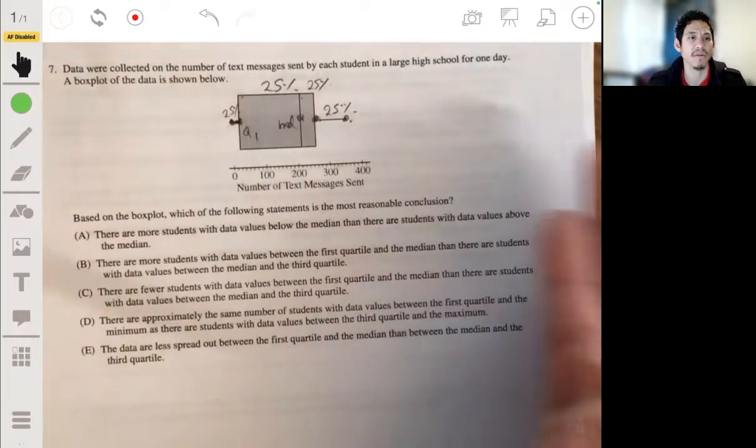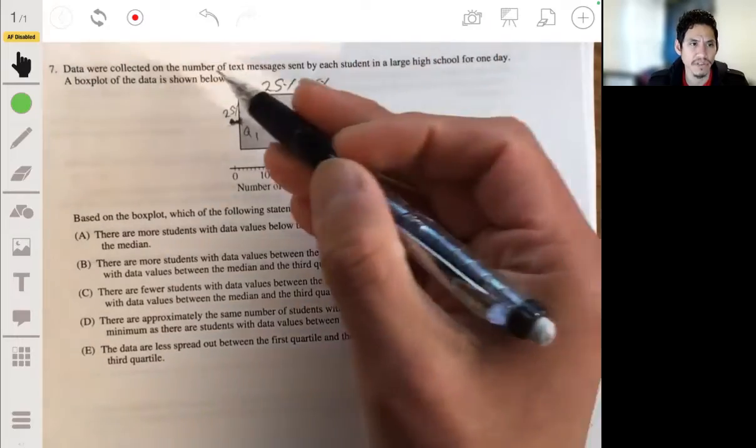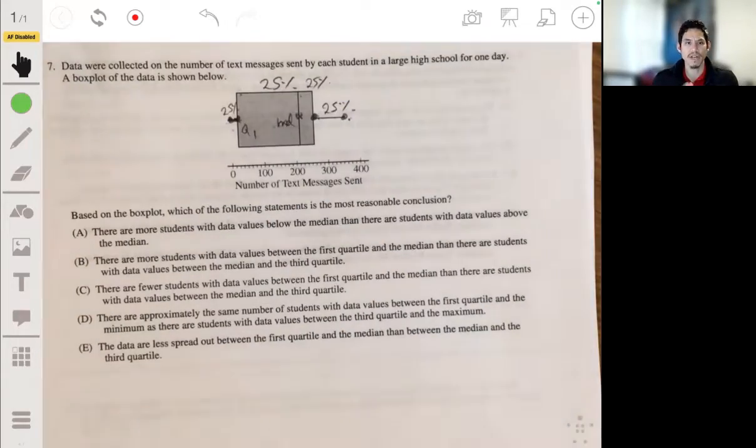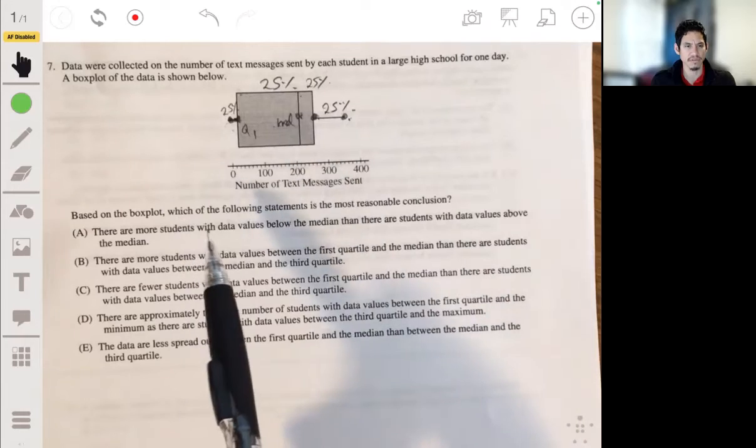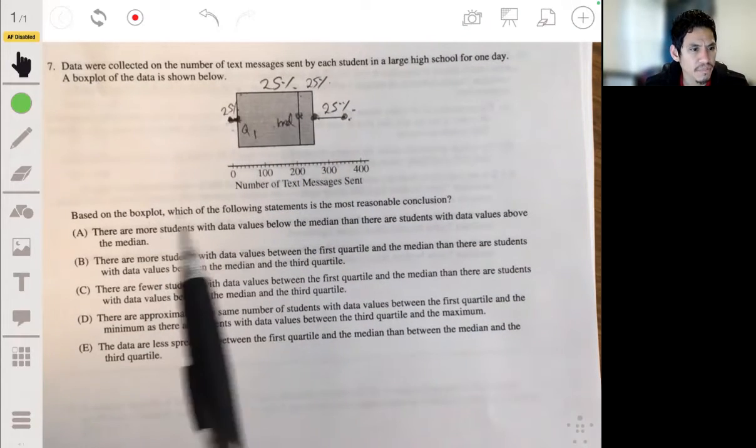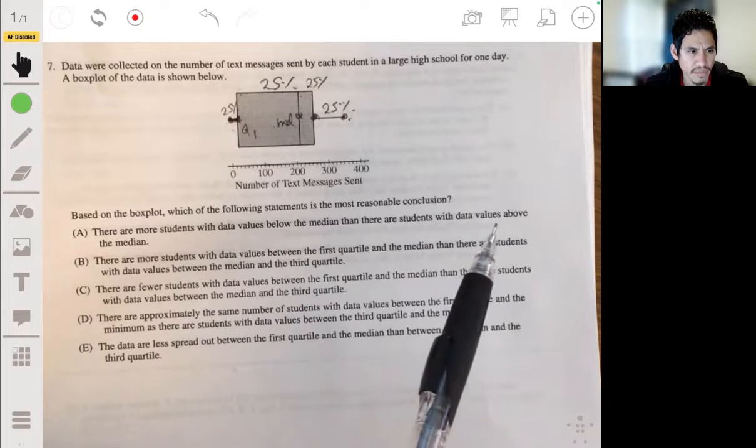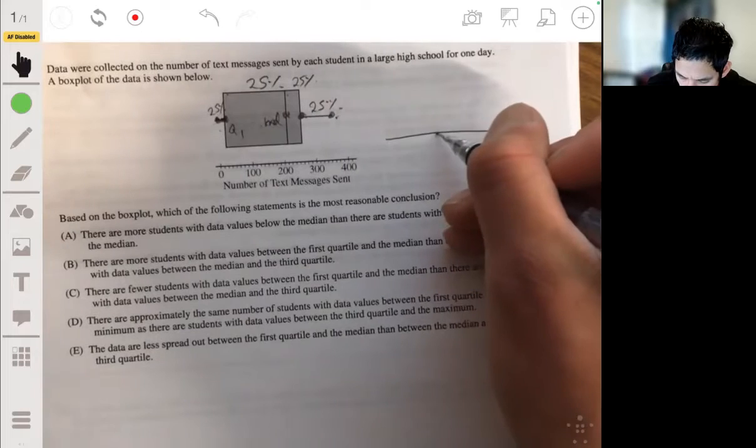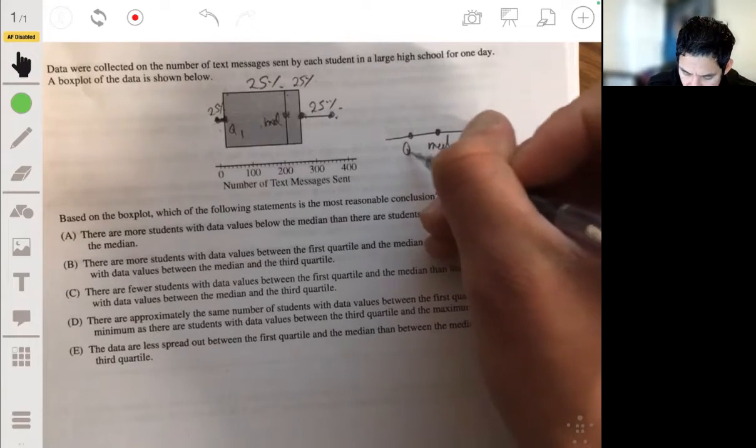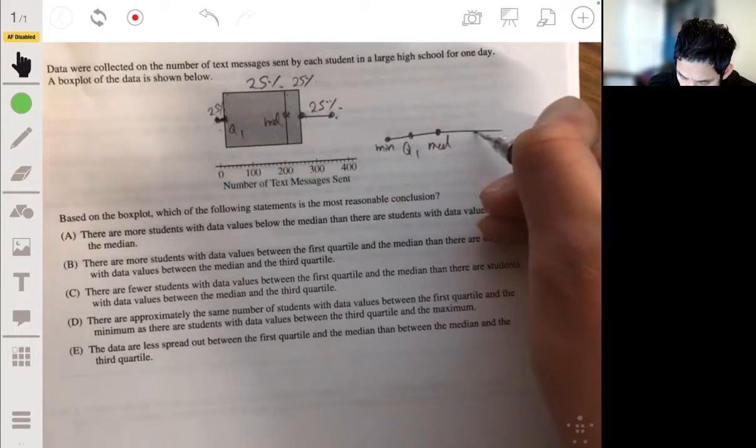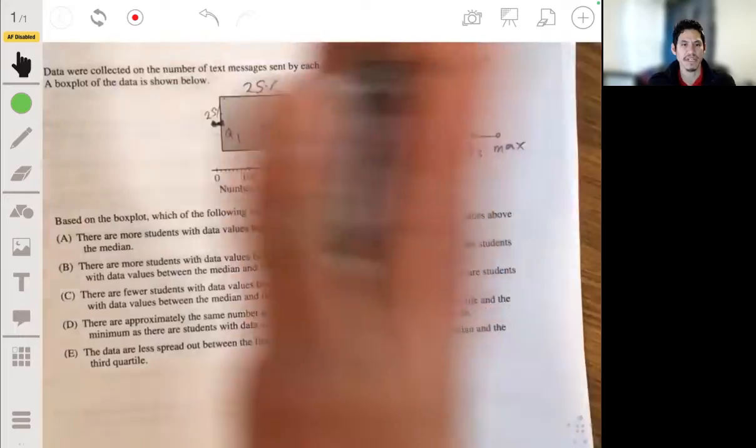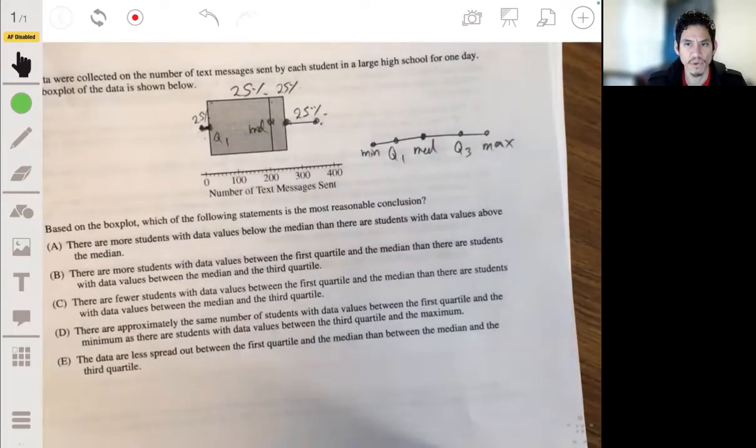Meaning that if there was like a thousand students, there would be 250 in each of those groups. So the amount of people in each of those intervals is the same. So that's kind of what you want to make sure you understand. Let's go through these and see what they're trying to get at. There are more students with data values below the median than there are with data values above the median? No, because again, 50% is above, 50% is below. Half the data. Let me just do this—the median's in the middle. Remember that's Q1 and the minimum, Q3 and the max. That's the five number summary. There's 50% above the median, 50% below the median. Doesn't matter how much more wide one side is than the other. It's not A.